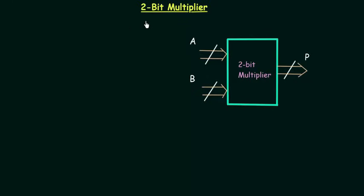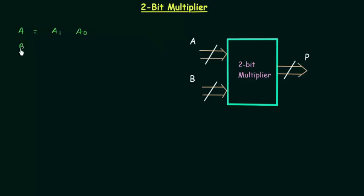In this lecture I will obtain a 2-bit multiplier circuit and also explain how it works. We call it a 2-bit multiplier because it is used to multiply 2-bit numbers. Let's say A is the first number with 2 bits A1 and A0, where A1 is the MSB and A0 is the LSB. The second 2-bit number is B with B1 and B0 as its 2 bits.